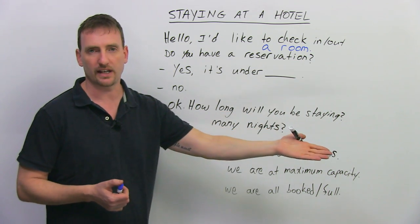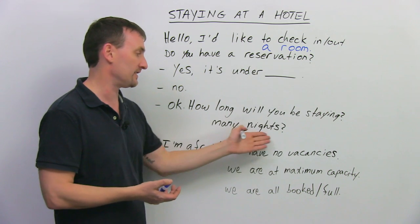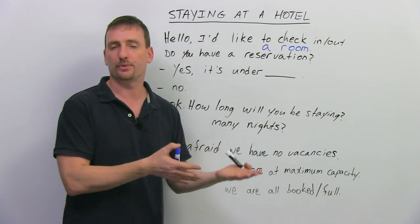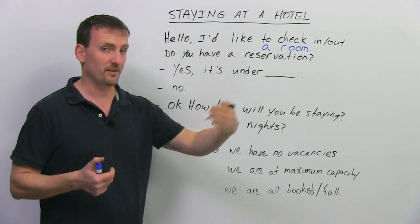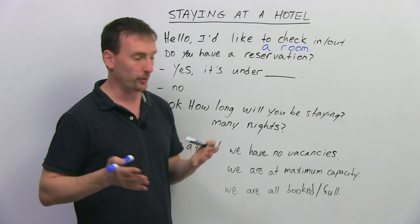How long will you be staying? Basically, how many nights, or they may just say how many nights. How many nights will you be staying at the hotel? Two, three, four, whatever. You can give them the date, or you can give them the number of nights. Both work.